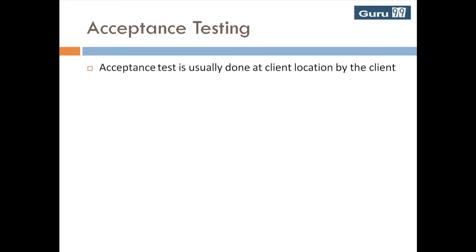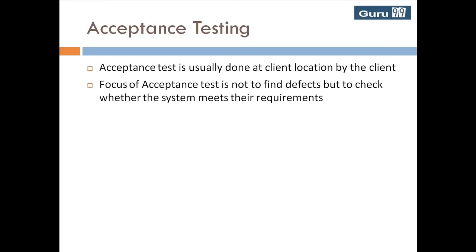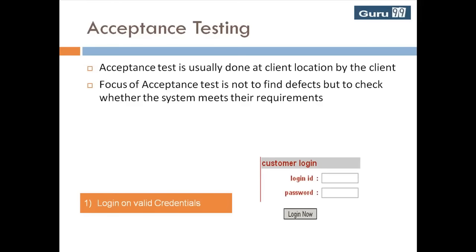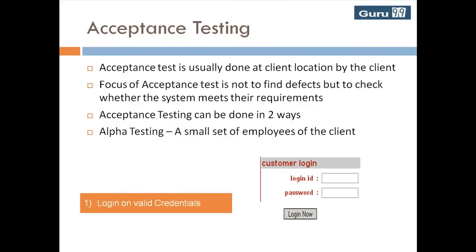Acceptance testing is usually done at the client location, by the client, once all the defects found in the system testing phase are fixed. The focus of acceptance testing is not to find defects but to check whether the software system meets their requirements. Since this is the first time the client sees their requirements — which were plain text — in an actual working system, acceptance testing can be done in two ways: alpha testing, where a small set of employees of the client will use the system as the end user would; and beta testing, where a small set of customers will use the software and recommend changes.